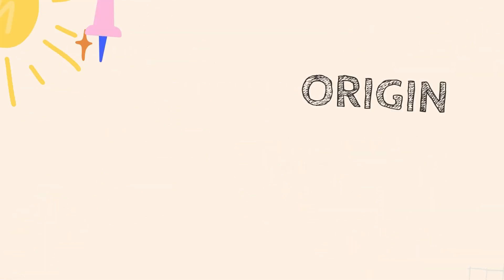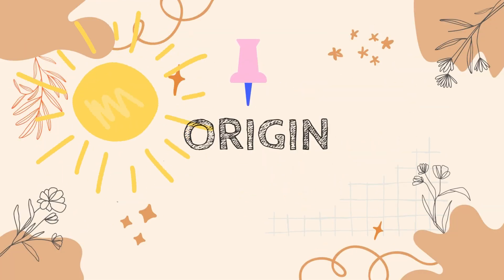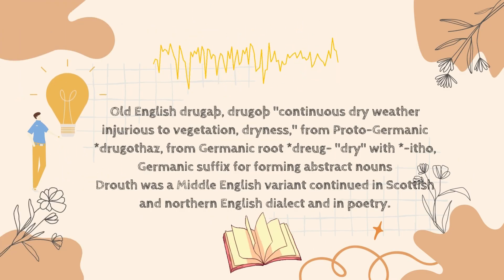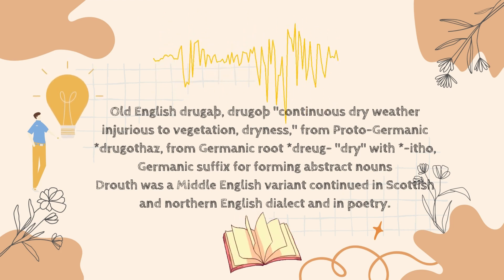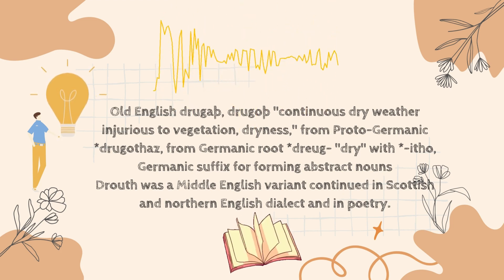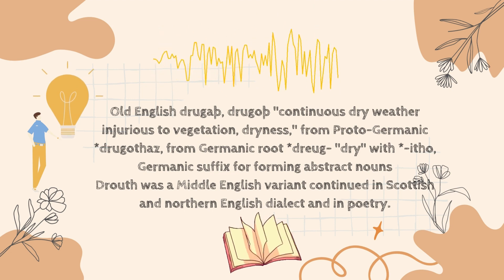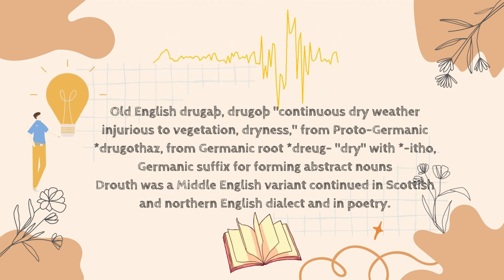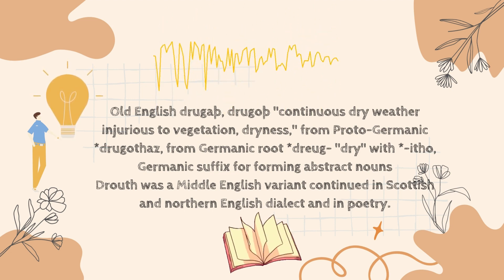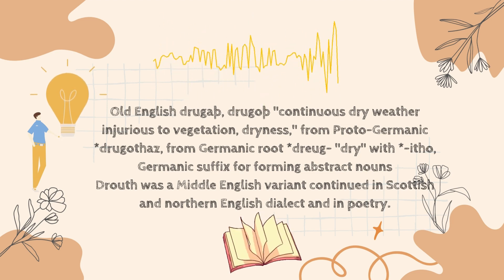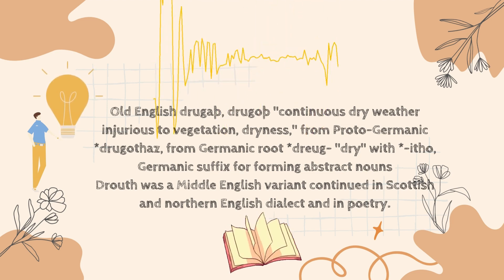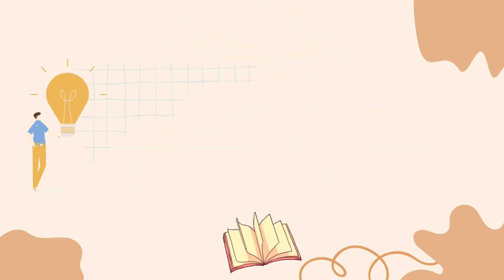Origin is to give our viewers some background knowledge about the word. From Old English 'druga' or 'drugo', meaning continuous dry weather injurious to vegetation — dryness. From Proto-Germanic 'drugathaz', from the Germanic root 'dro' meaning dry, with 'etho', a Germanic suffix forming abstract nouns. Drought was a Middle English variant continued in Scottish and Northern English dialect and in poetry.